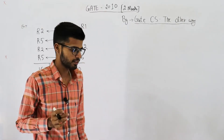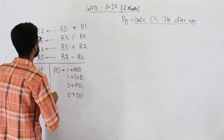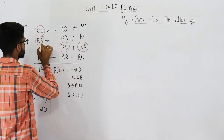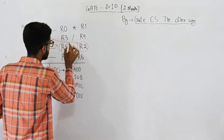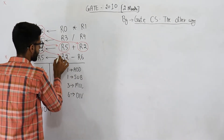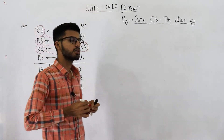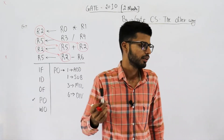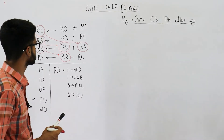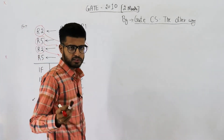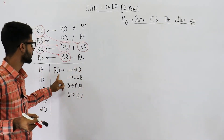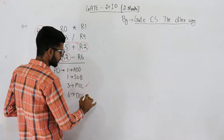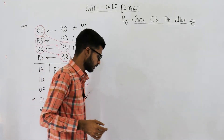Because full forwarding is used, you can neglect the dependencies. For example, R2 appears in multiple instructions and R5 also appears in multiple instructions — these dependencies exist, but with full forwarding there will be no stall cycles due to dependencies. However, there will be stall cycles because the perform operation stage requires more than one cycle for multiply (three cycles) and for divide (six cycles).